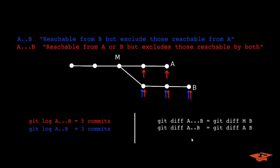But in git diff, for example, if we took git diff A triple dot B, that is equivalent to git diff commit M on the left, B on the right. Which basically means give me the difference between B and the last merge point between A and B. That's basically what this triple dot diff notation means.